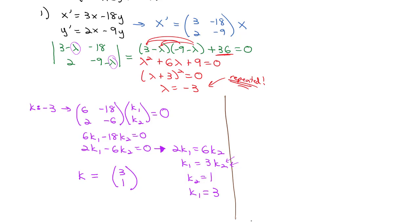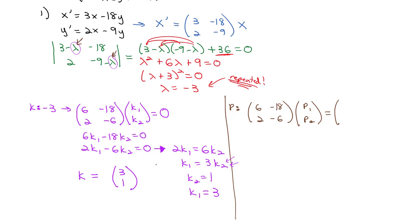Normally we would now find a second eigenvector, but there isn't one. So instead we find the vector p to establish linear independence. We still plug in lambda equals negative 3, giving us the same matrix: [6, -18; 2, -6]. But this time we solve for [p1, p2] such that the product equals our eigenvector [3, 1] rather than zero.